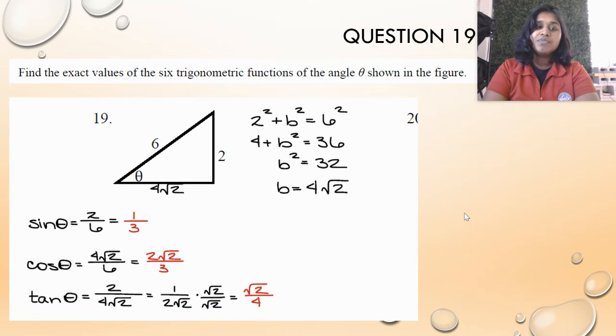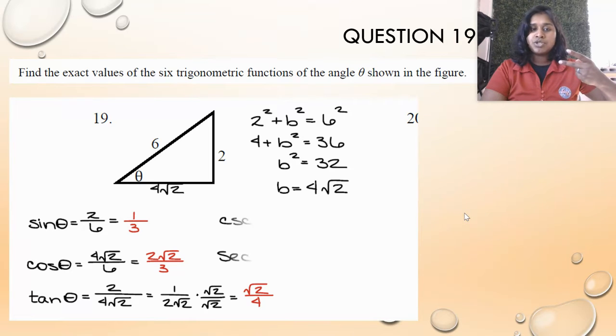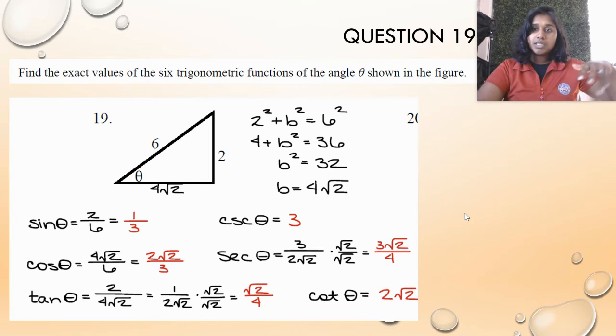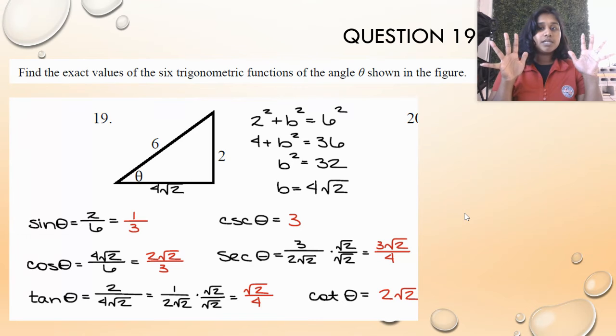To get cosecant, secant, and cotangent, those are the reciprocals, so all we do is flip those answers. Ta-da! And that's it.